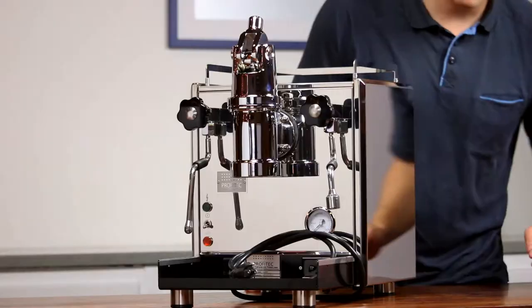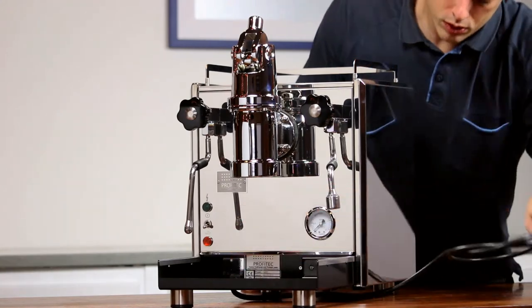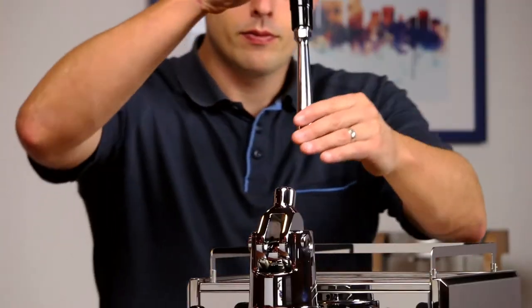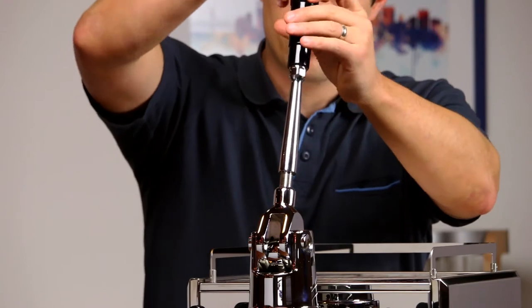Inspect the machine for damage. If you find any damage, please contact us immediately. Attach the lever by threading it onto the joint at the top of the group head.